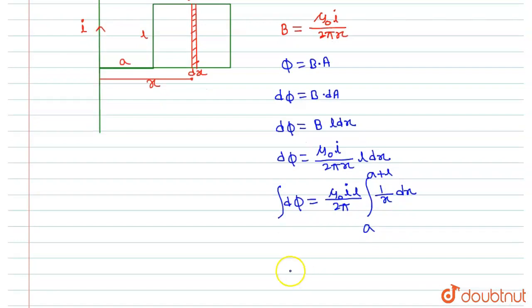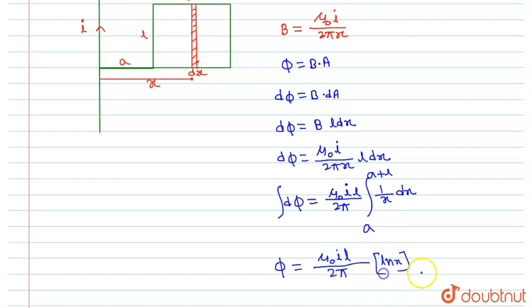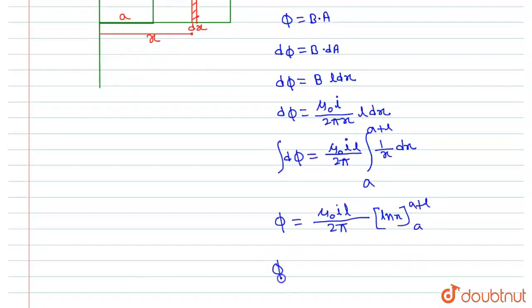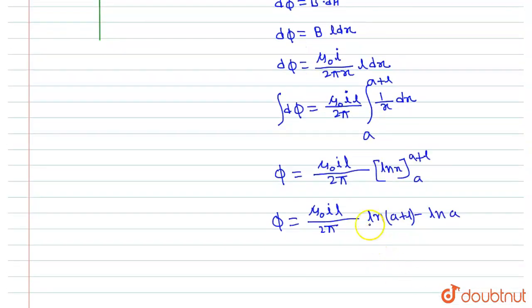From here we can see that flux equals (μ₀Il / 2π) times the integral of (1/x) dx. Since the integration of 1/x equals ln x, we evaluate ln x with limits a to a plus l, giving φ equals (μ₀Il / 2π) times [ln(a + l) − ln(a)]. Using the identity ln a − ln b = ln(a/b).